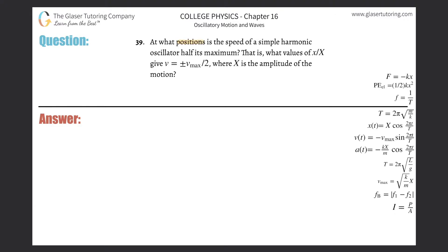Number 39: At what positions is the speed of a simple harmonic oscillator half its maximum? That is, what values of little x over big X give... Basically, we have to find relative positions. We're talking about maximum velocity and then maximum displacement or amplitude.